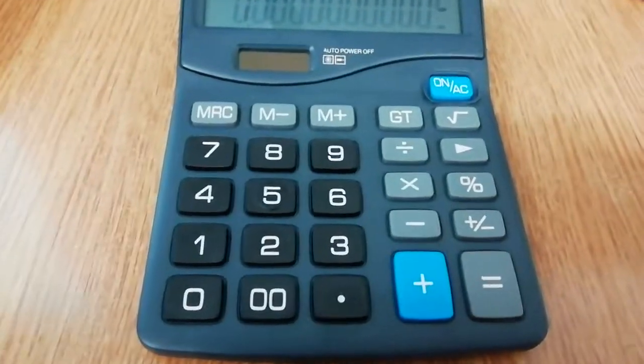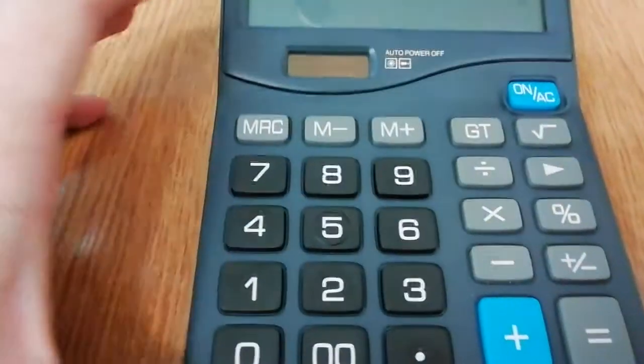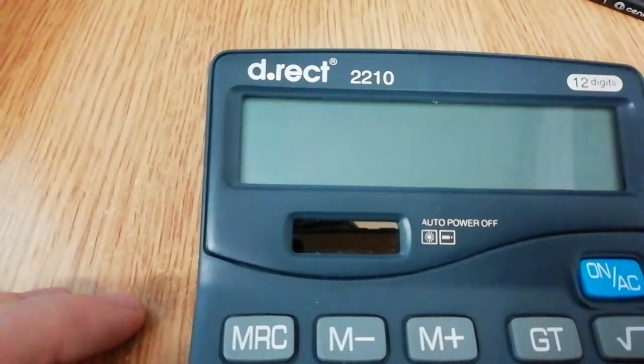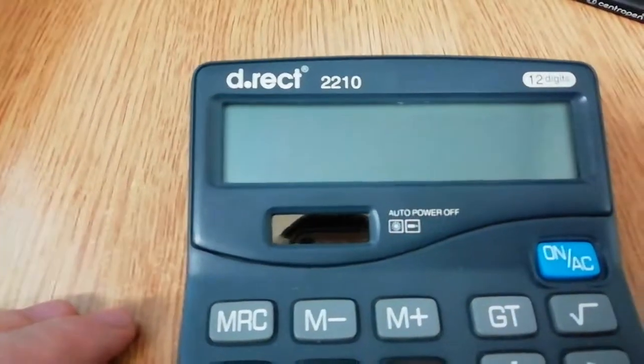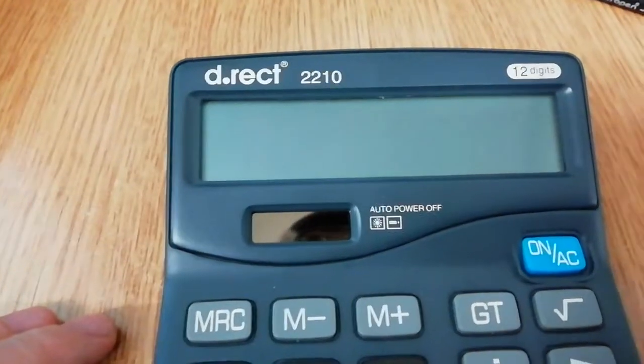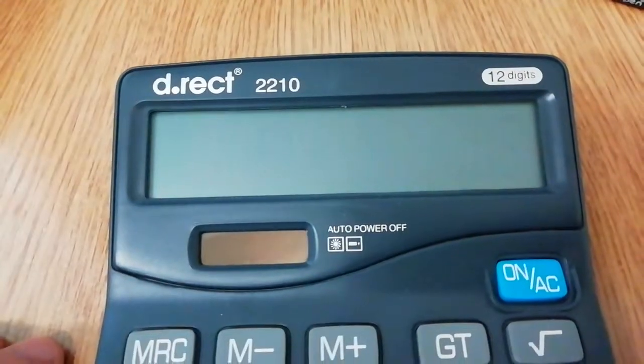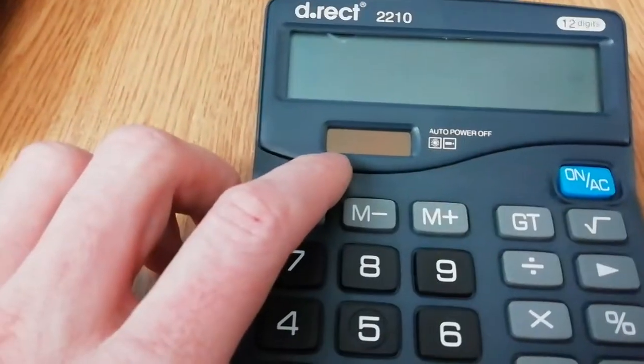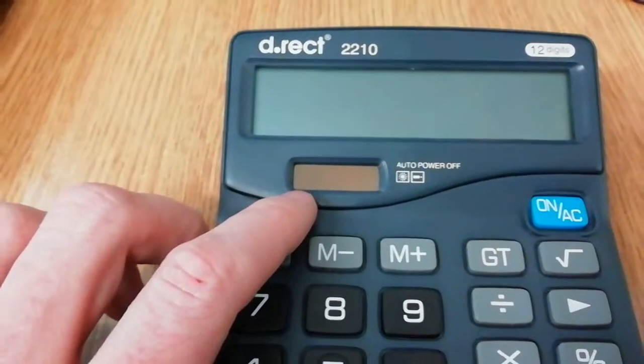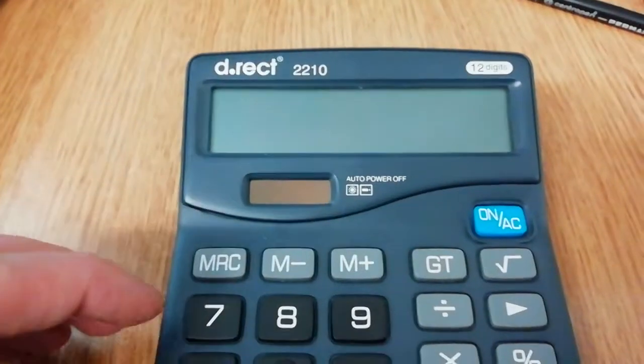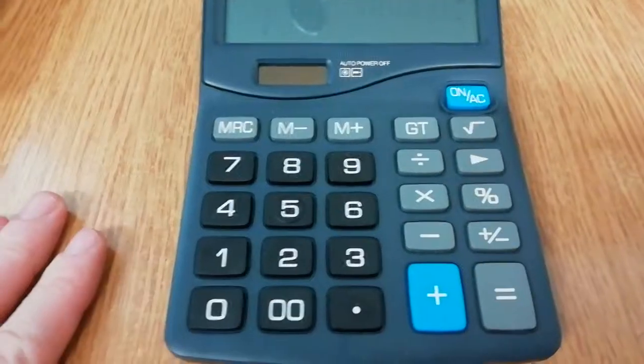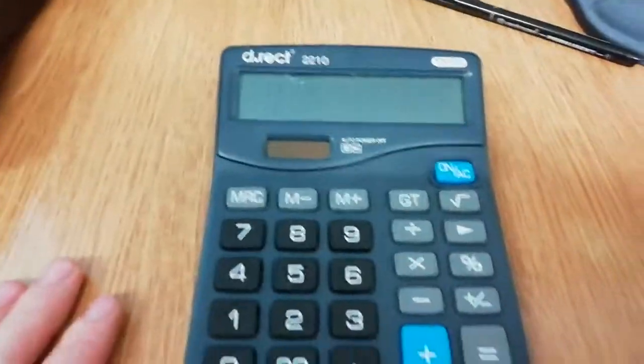Okay, hello everyone. Today I will show you a new calculator, and it's the d.rect 2210, a 12-digit calculator where it's possible to use light or switch on, off, auto power. So it's a very practical calculator with a very nice design.